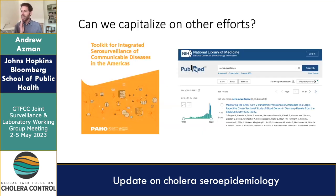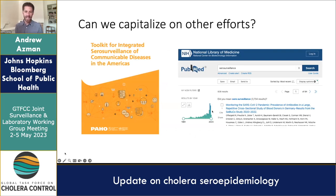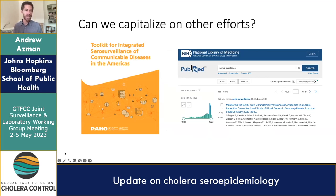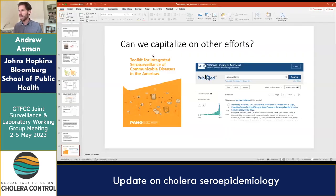Organizations like PAHO are thinking very seriously about this — they've put out a nice toolkit for integrated serosurveillance. Since COVID, there's been a marked increase in serosurveillance publications. This is trendy, and we have an opportunity to capitalize on these efforts and collect more data that can complement clinical surveillance to give a better picture of what's going on in communities. That's all I have — happy to take questions.